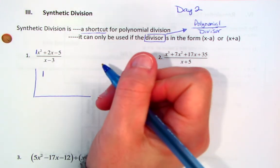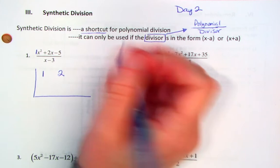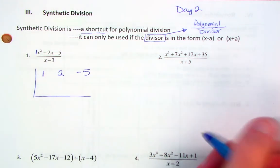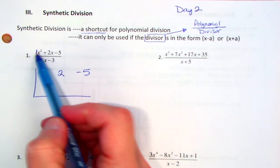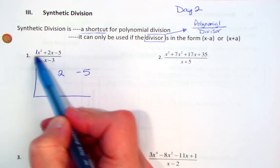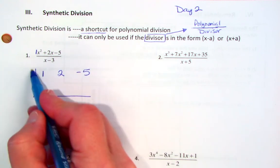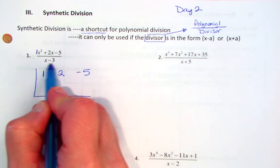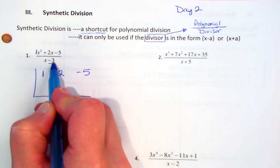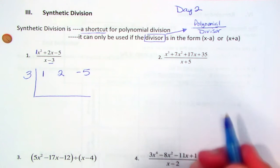So we put a 1 there, a 2 here, and then a negative 5 — those are the three numbers, the A, the B, and the C in the polynomial. Out front is going to be the opposite of this number. So if the factor is x minus 3, the number out front is going to be a 3.